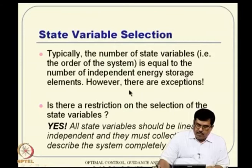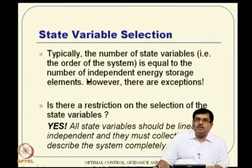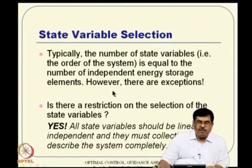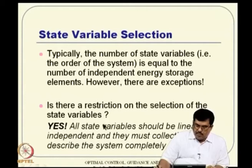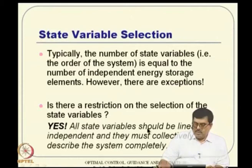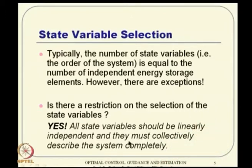Coming to state variable selection, typically the number of state variables, that is the order of the system, is equal to the number of independent energy storage elements, though there are exceptions. Is there any restriction on the selection of state variables? The answer is yes. The primary requirements are: all state variables should be linearly independent, and all of them must collectively describe the system completely.